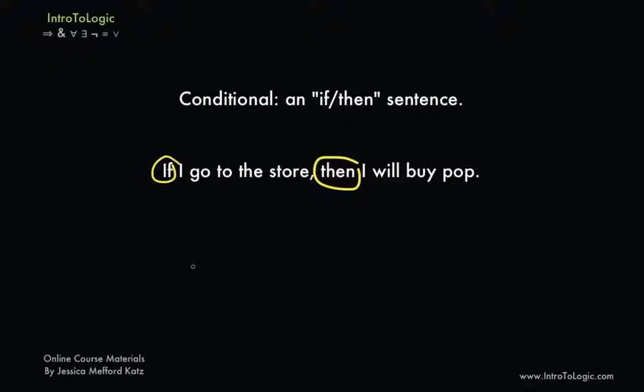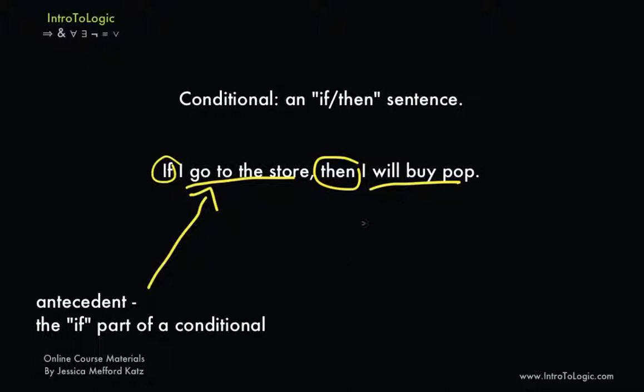The if part of the sentence is called an antecedent. So here we have the sentence, within the sentence, I go to the store. So I go to the store is the antecedent of this conditional. And the then part of the sentence is what we call the consequent. The sentence, I will buy pop, is the consequent of the conditional. If I go to the store, then I will buy pop.